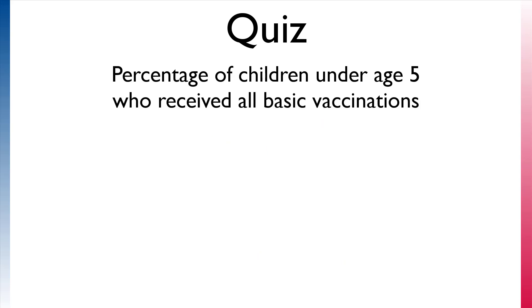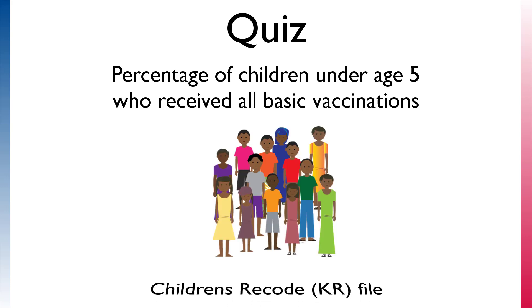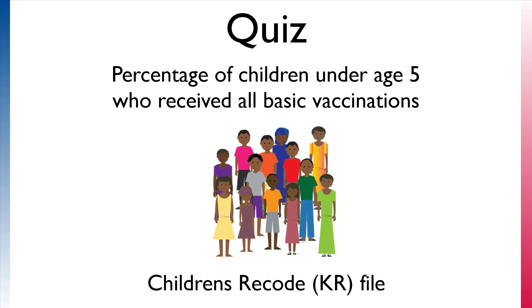And finally, which file would you use to examine the percentage of children under age 5 who received all basic vaccinations? You would use the Children's Recode, or KR file, since you are examining children under 5 years of age.